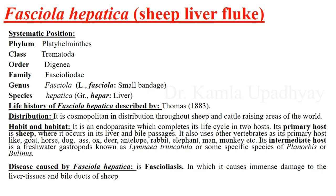So Fasciola hepatica is a small-bandage-like animal that lives inside the liver. The life history was first described by Thomas in 1883. Its distribution is cosmopolitan — wherever sheep or cattle are raised, these are found. As for its habit and habitat, it is an endoparasite that completes its life cycle within two hosts.